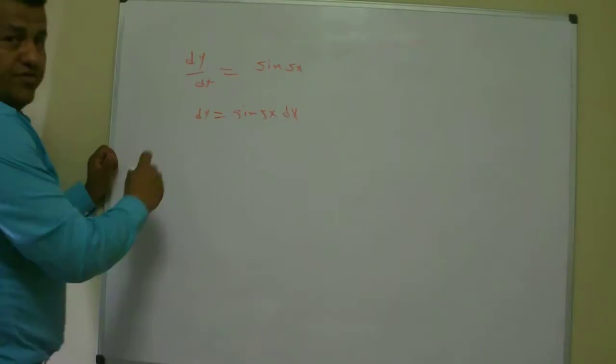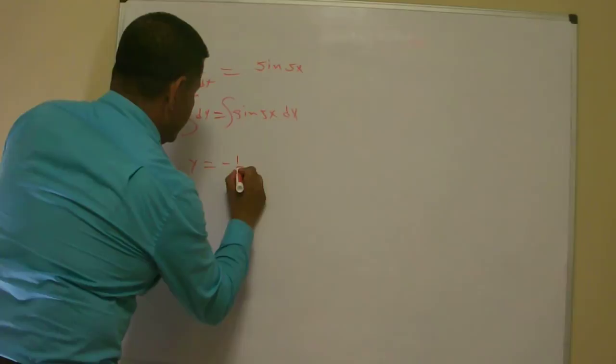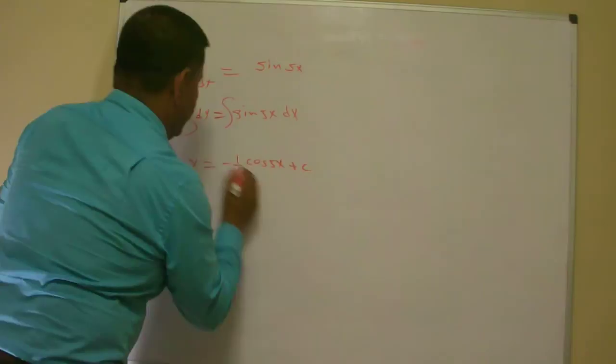And I integrate on both sides, and I get y is equal to negative 1 fifth cosine of 5x plus c. That is the answer for that one.